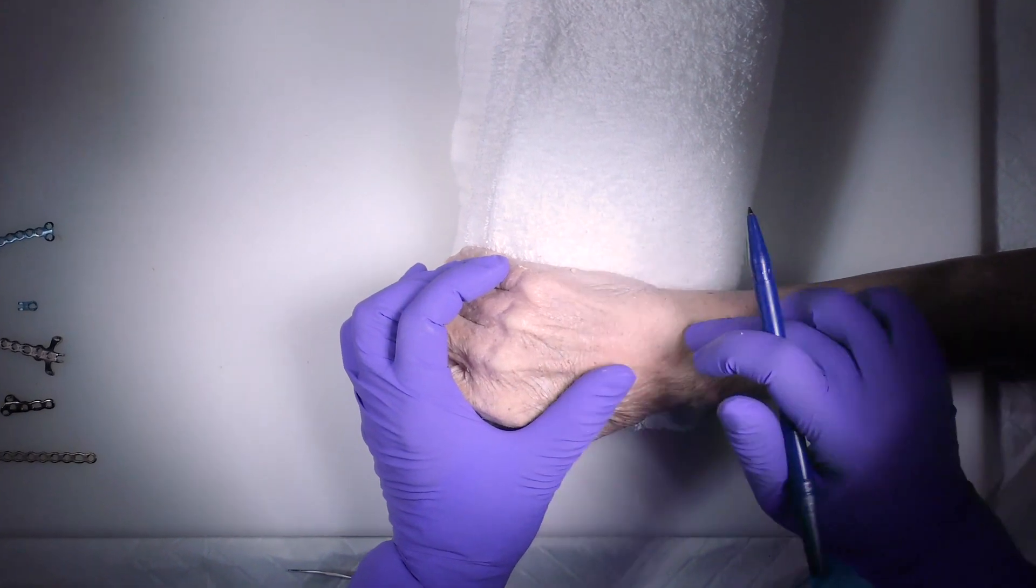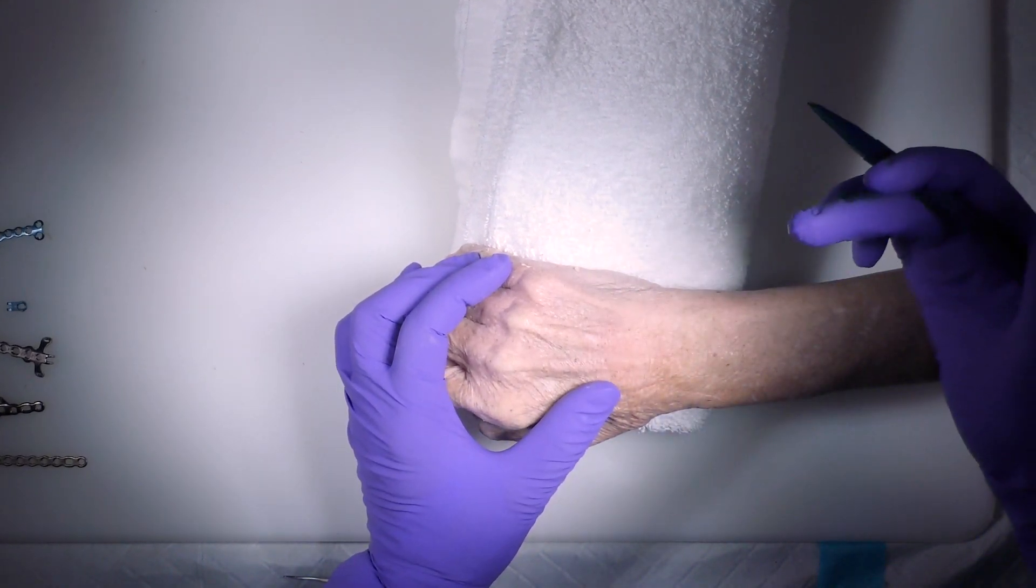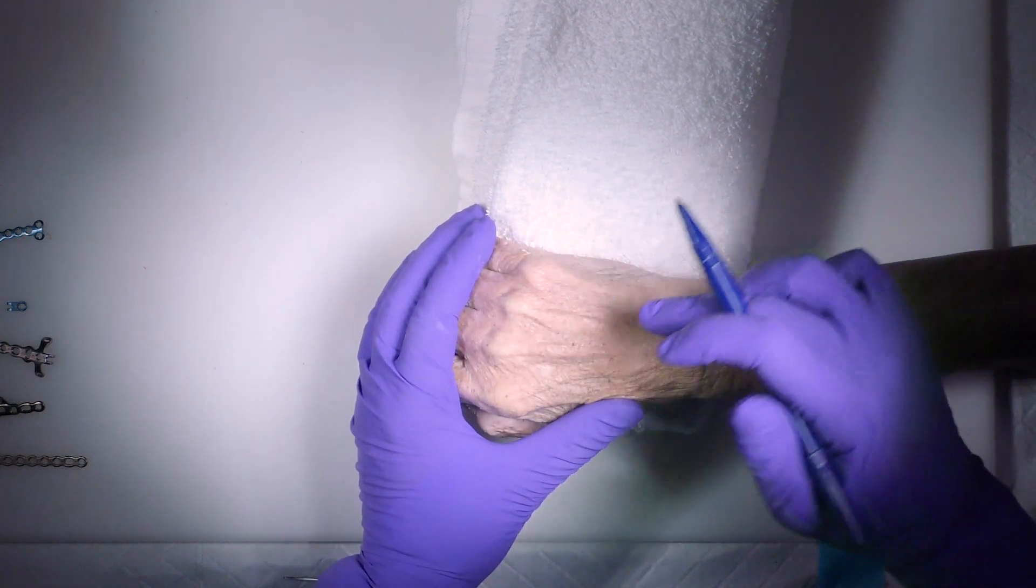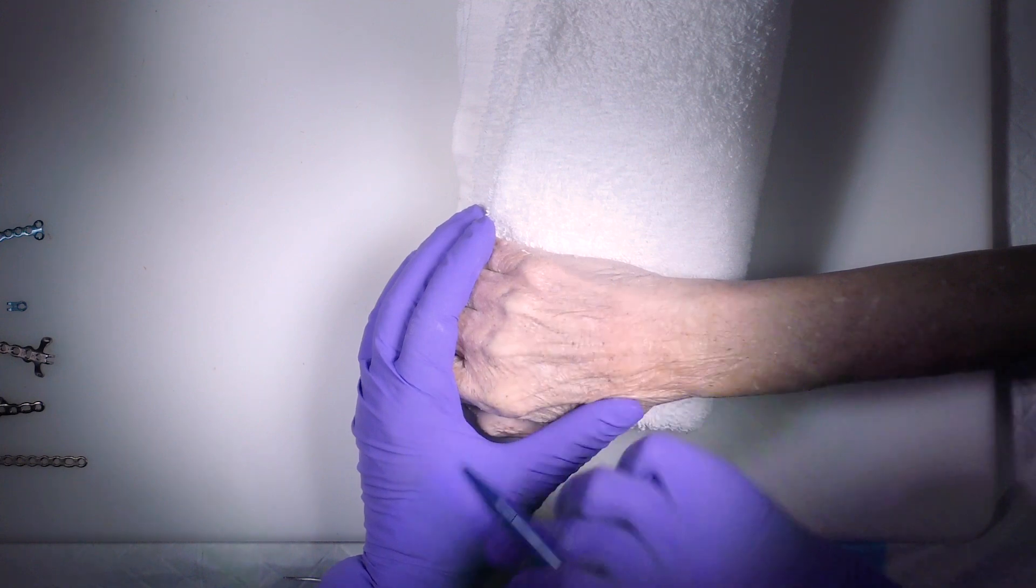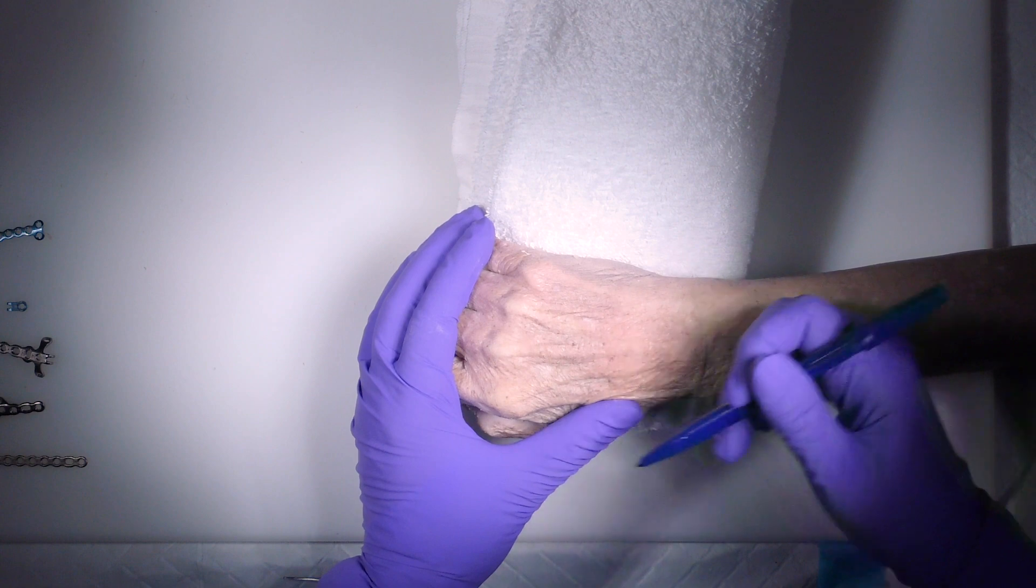When we're approaching the metacarpals, where we place the incision depends a little bit about what we're trying to do. Let's say you're dealing with a case where you have multiple metacarpal fractures. That's very common, by the way. They have a middle and a ring metacarpal. You can place your incision between the two and access both.